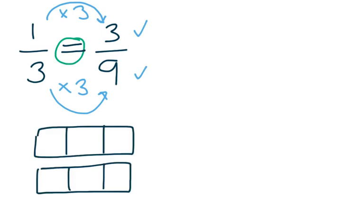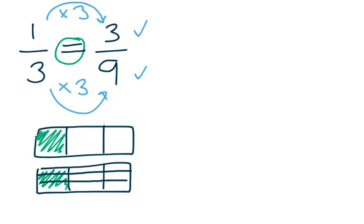Let's show what this would look like as a picture. If I started with one third, I would have one piece shaded out of three. Now to see if that's equivalent to three ninths, if I cut each of my pieces into three, I can see that now I have three pieces shaded and nine pieces total. They still take up the same amount of my whole, but I just cut them into smaller pieces, which represents why we multiplied the top and bottom times three — we cut them into three smaller pieces to make three ninths.